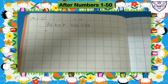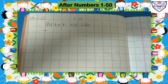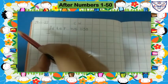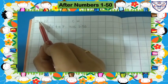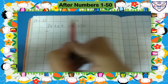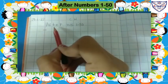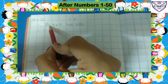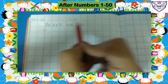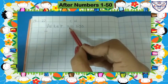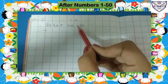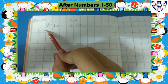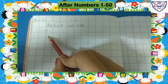Today we will write after numbers 1 to 50 in a square line notebook. Write here today's date, that is 29-1-22. Write here classwork. In the next line we will write the heading: after numbers 1 to 50. Now leave one line and we will start from here.